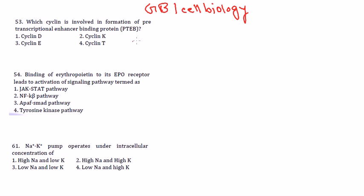We have listed three questions. The first question asks: which cyclin is involved in the formation of pre-transcriptional enhancer binding protein, or PTAB? To answer this, you need to know what PTAB is and what its function is. Once you know that, it's much easier to solve — but if you don't know what PTAB stands for or what it does, you can't get the answer.